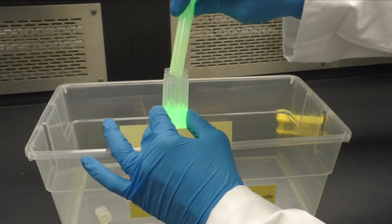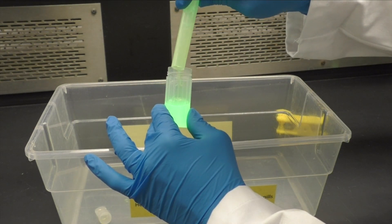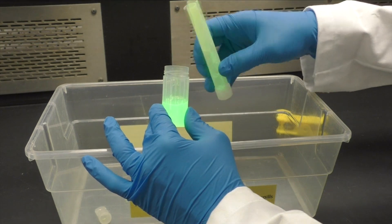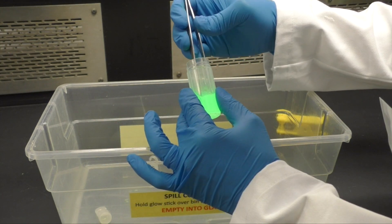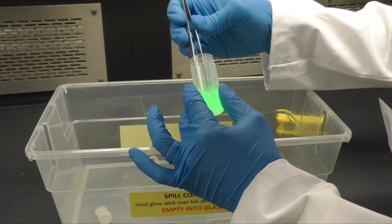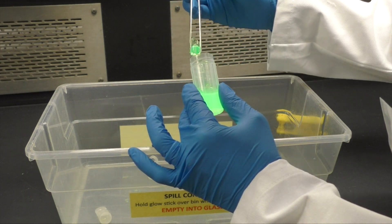Next, pour the glow stick solution into a 20 milliliter plastic vial while still holding it over the spill bin. If there are a lot of small glass pieces in your vial, use your forceps to transfer the pieces into the spill bin.